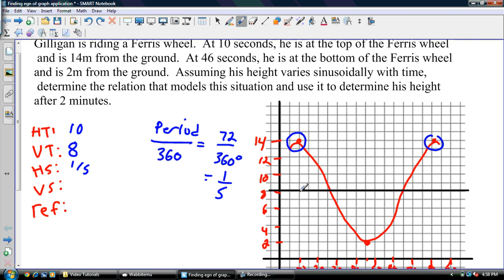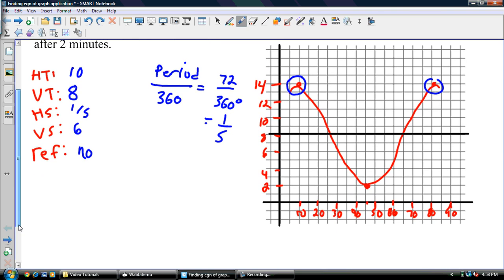My VS is going to be my amplitude, which is the distance from the sinusoidal axis to the top. So that's going to be 6 units. And I started at a max, so I have no reflection. That's where cosine starts with no reflection.